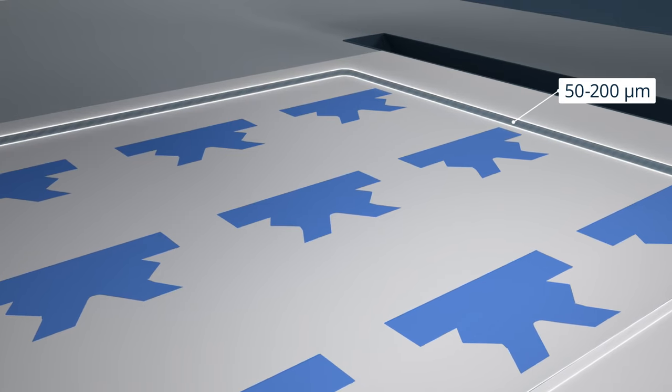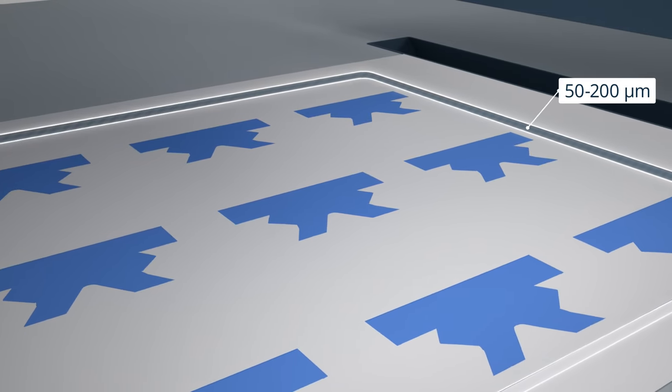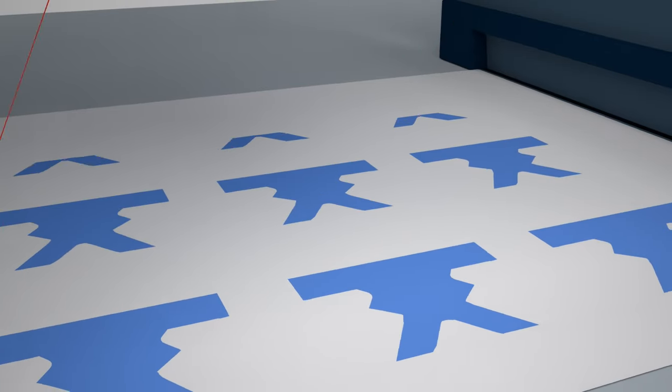The build platform moves down by one layer into the build chamber, typically about 200 microns. The process repeats until the parts are complete.